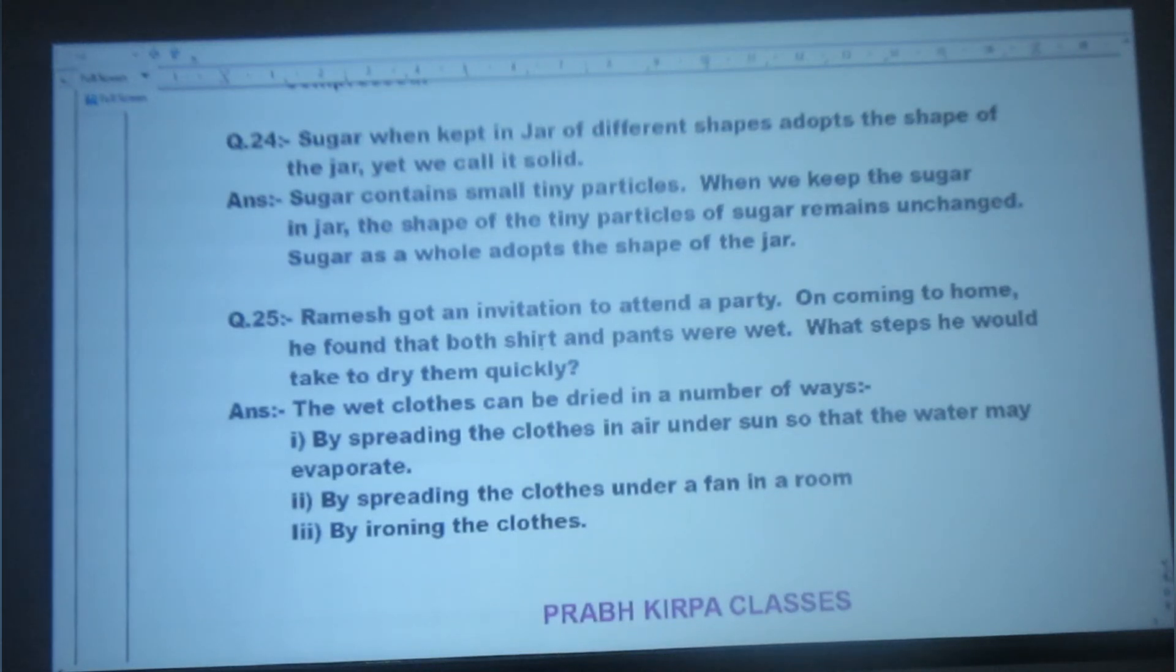Question 25: Ramesh got an invitation to attend a party. On coming home, he found that both shirt and pants were wet. What steps he should take to dry them quickly? Answer: The wet clothes can be dried in a number of ways. Number one, by spreading the clothes in air under sun so that the water may evaporate. Second, by spreading the clothes under a fan in a room. Third, by ironing the clothes.